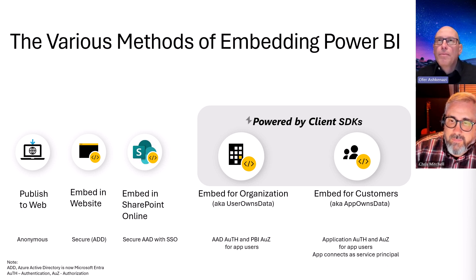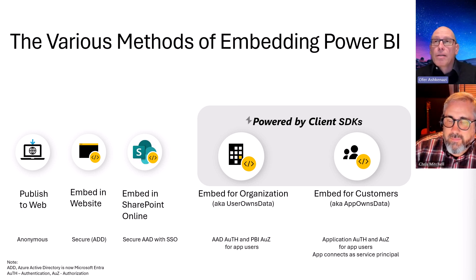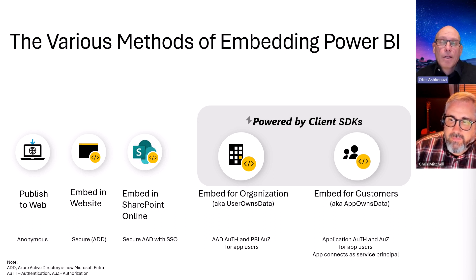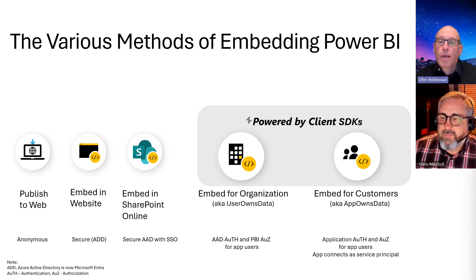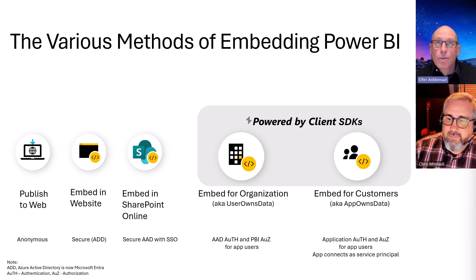When we get into more serious stuff, it's either embed for organization — also known as user-owns data — or embed for customers, also known as app-owns data. These two scenarios use the client SDKs and allow you to have much more control and customization over the user experience, the layout, and many other things. With embed for customers, you get even more flexibility in terms of authentication and authorization — it's really up to your application backend. We don't tell you how to authenticate your end users.